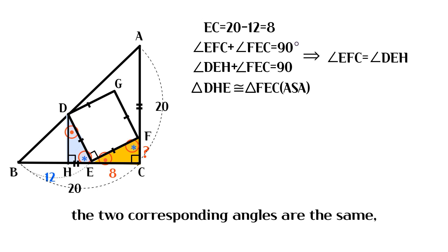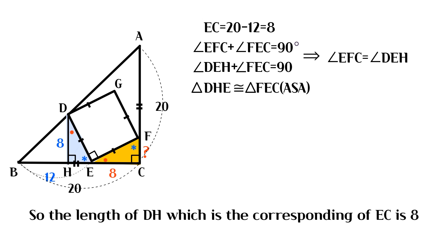Because the two corresponding angles are the same, and their included sides have the same length. So the length of DH, which corresponds to EC, is 8.